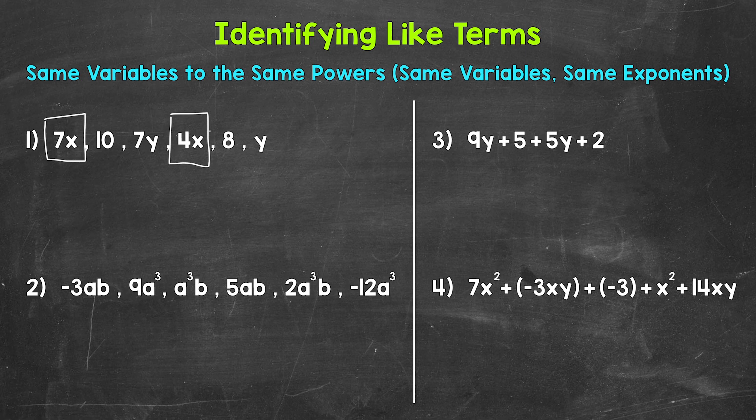I want to mention that if no exponent is shown, then there is an understood exponent of 1 — so something is to the power of 1. Anything to the power of 1 is just itself, so we typically don't include the exponent of 1; it's not needed. For 7x and 4x, those variables are to the power of 1, so we have the same variable of x in those terms to the same power of 1.